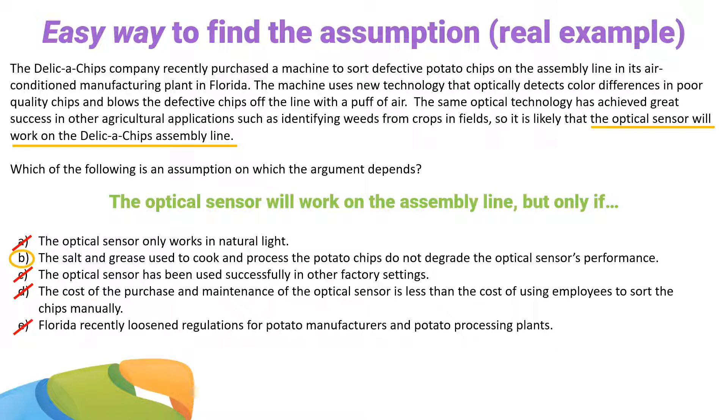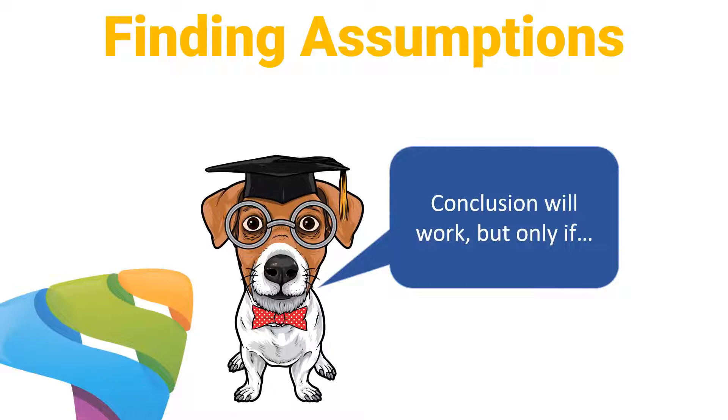Very nicely done. So the easy way to pick out assumptions in any of these questions: first, pick out the conclusion, and then say, 'That conclusion will work, but only if.' The answer choice that best completes that sentence is your assumption. Pull out that conclusion and ask yourself, 'That will only work if...' — whichever answer choice completes that sentence, there's your right answer. Don't forget about your free bonus: my free two-week supercharged GRE study plan, yours for free — download it right in the description. Great job, we'll see you next time.